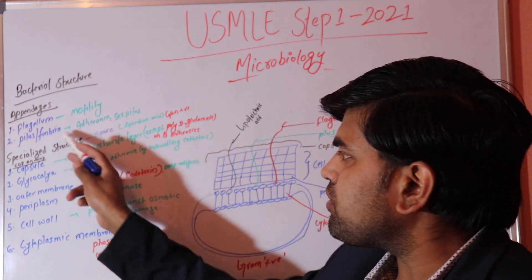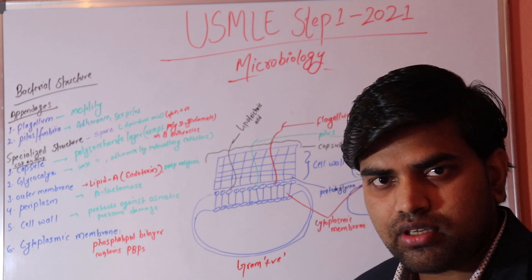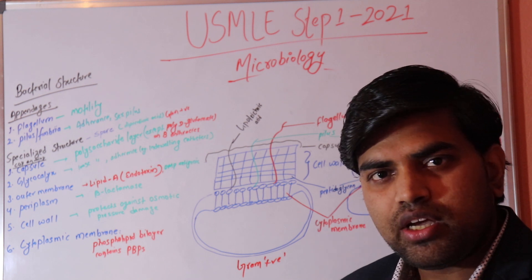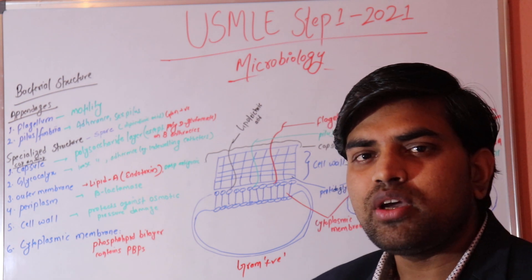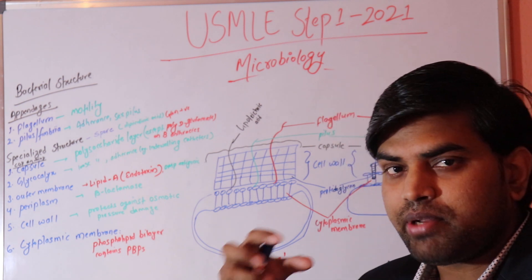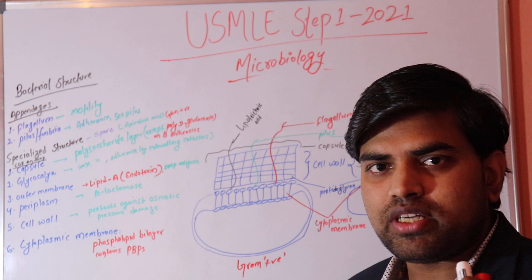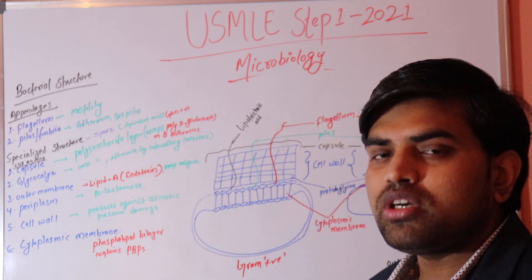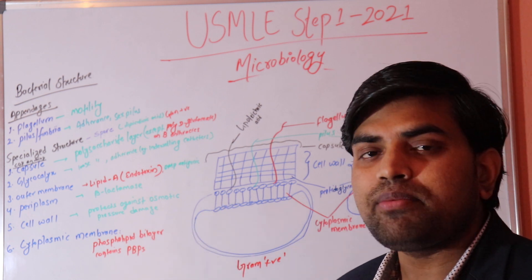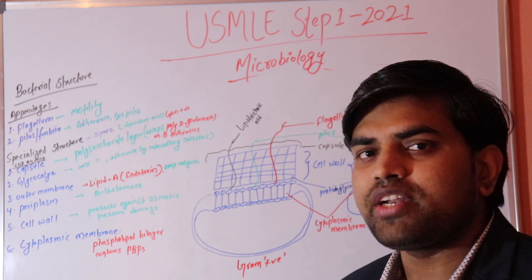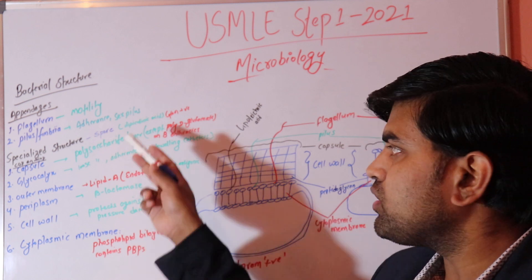Bacteria also have an additional structure called pili. Pili have a special function of attaching to the cell surface. For example, bacteria that transfer from the gut to the urinary tract attach firmly to the urethra via pili, so the force of urination cannot wash them away. Some bacteria also have sex pili, which help in conjugation — transferring genetic material between bacteria.